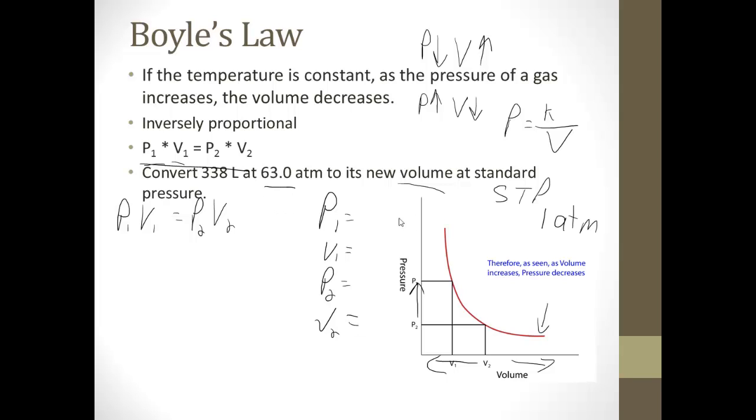So here's how I want you to set these up. Our formula is P1V1 equals P2V2. First we write down the formula, and now we've got to figure out what all these P's and V's are. Pressure 1, 63.0 atm. V1, 338 liters. Pressure 2, standard pressure, so 1 atmosphere. And its new volume, that's what we have to figure out. So we need to solve for V2.